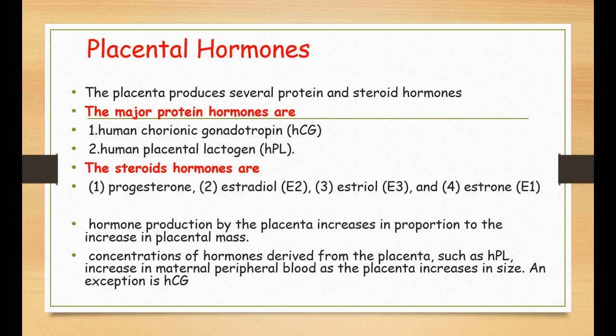The placenta secretes several hormones that are very important to maintain pregnancy. The major protein hormones are human chorionic gonadotropin (HCG) and human placental lactogen. The steroid hormones important for normal pregnancy include progesterone and estrogens. There are multiple classes of estrogen synthesized by the placenta: estradiol (E2), estriol (E3), and estrone (E1).